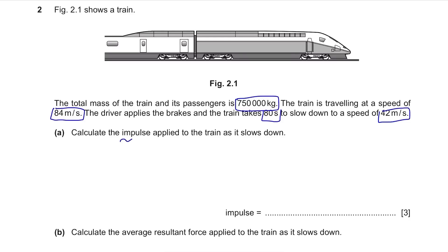Part A. Calculate the impulse applied to the train as it slows down. The question sounds confusing but just think about which formula you should use to solve this part of the question. Impulse equals to change in momentum which in formula is mv minus mu. m stands for mass, 750,000 kg, v final velocity, 42 m per second and u initial velocity, 84 m per second. Substitute the values and the answer is 3.2 times 10 to the power of 7. The unit can be either newton seconds or kilogram meter per second.